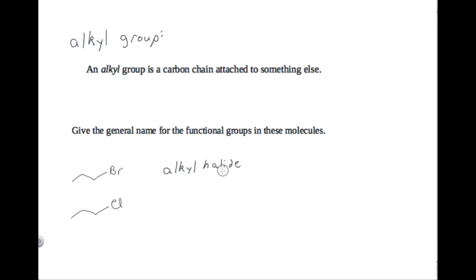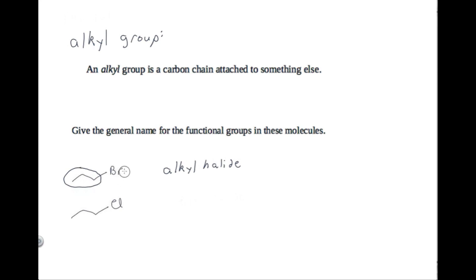It's called halide because it contains a halogen, and it's called alkyl because it has a carbon chain attached to the halogen. That's what I mean when I say an alkyl group is a carbon chain attached to something else. Here's an alkyl group — a carbon chain attached to a halogen. What would be the general name for the functional group in this molecule? That's another alkyl halide.